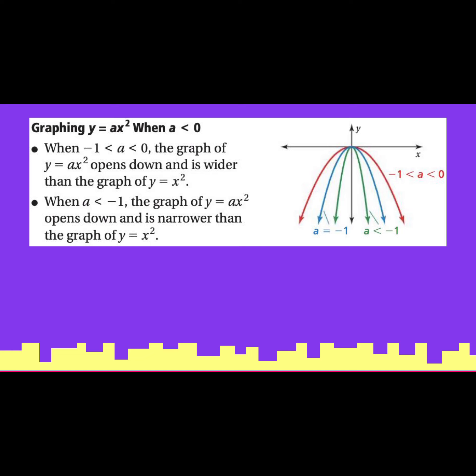On the other hand, if we have an a value in y equals a times x squared, and a is negative, then everything flips over. If we have a negative number that is between 0 and negative 1, the parabola is still very wide — it's just flipped over. So we could have a regular u or an upside-down u. If a is negative, everything flips.